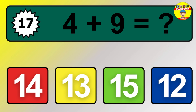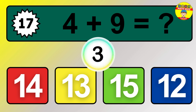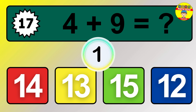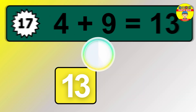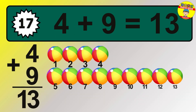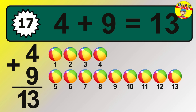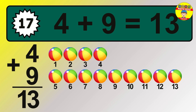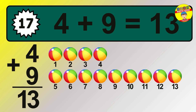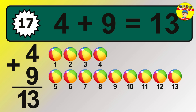Question 17. 4 plus 9 equals what? So the answer is 4 plus 9 is 13. Let's count it. 1, 2, 3, 4, 5, 6, 7, 8, 9, 10, 11, 12, 13.